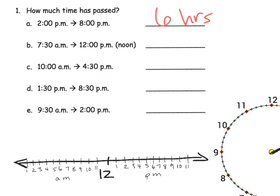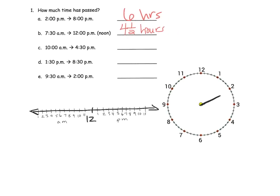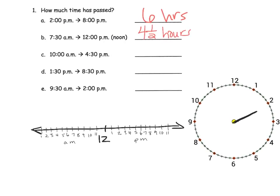So parents and teachers, you have a choice. You can either use that analog clock or, like this, you can use a number line. I just kind of listed noon in the middle, then went 12 hours that way and 12 hours that way, and that's how I made my clock.